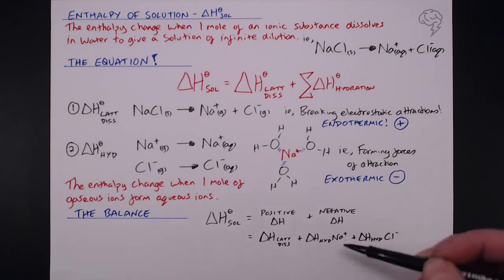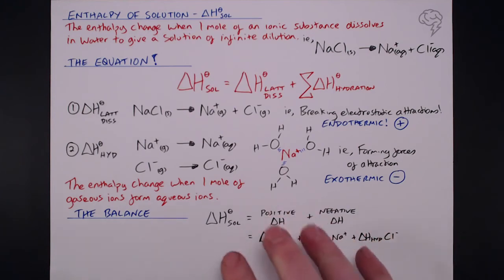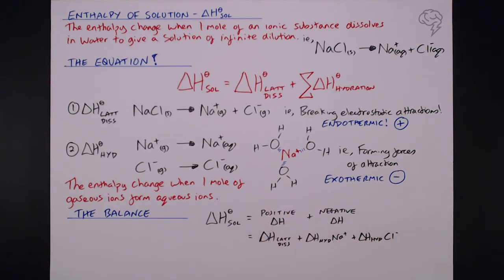If it was, say, sodium oxide, Na2O, you need two sodiums here. So you need to multiply by the number of ions you have as well. So calculating delta H solution can be positive or negative depending on this balance.